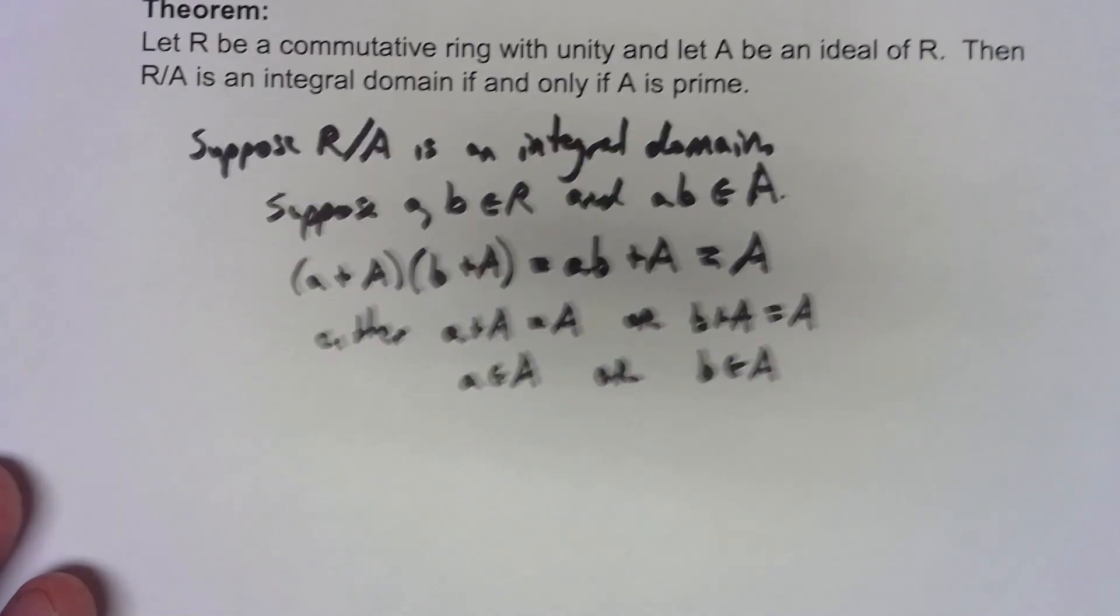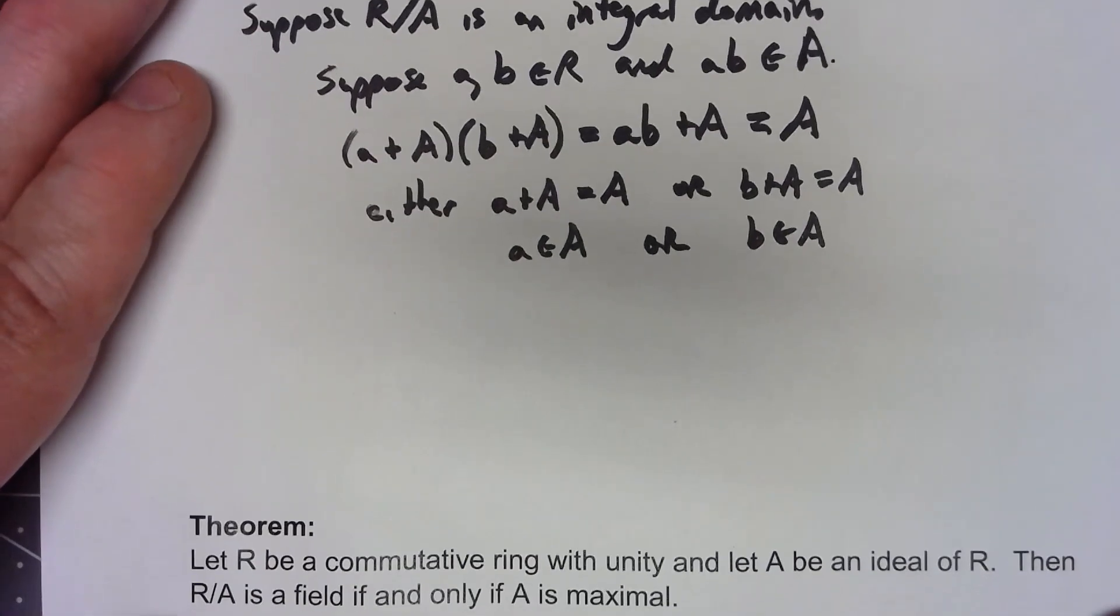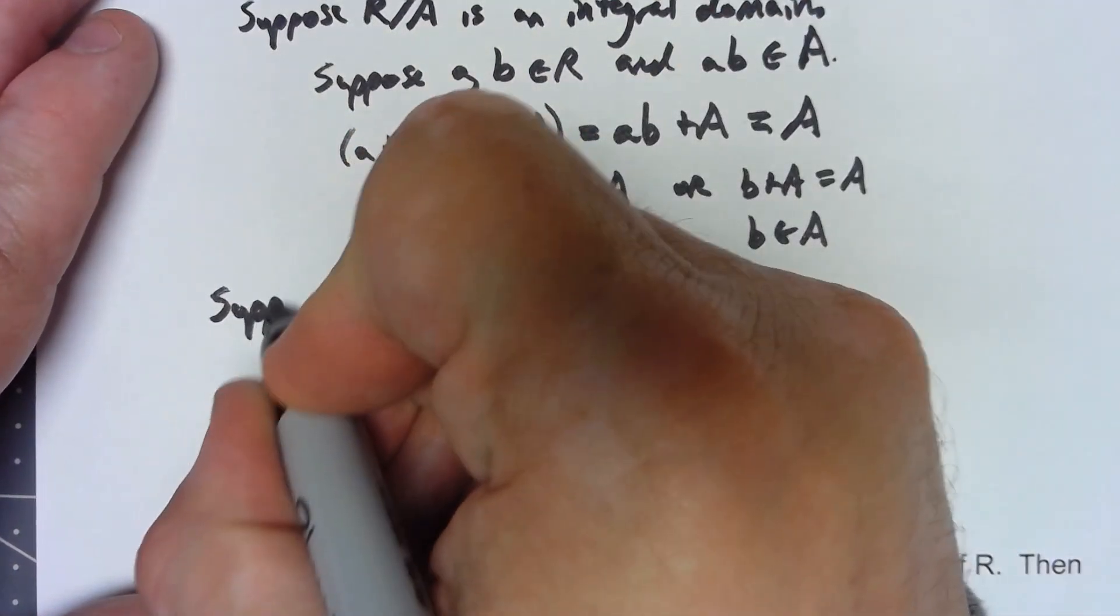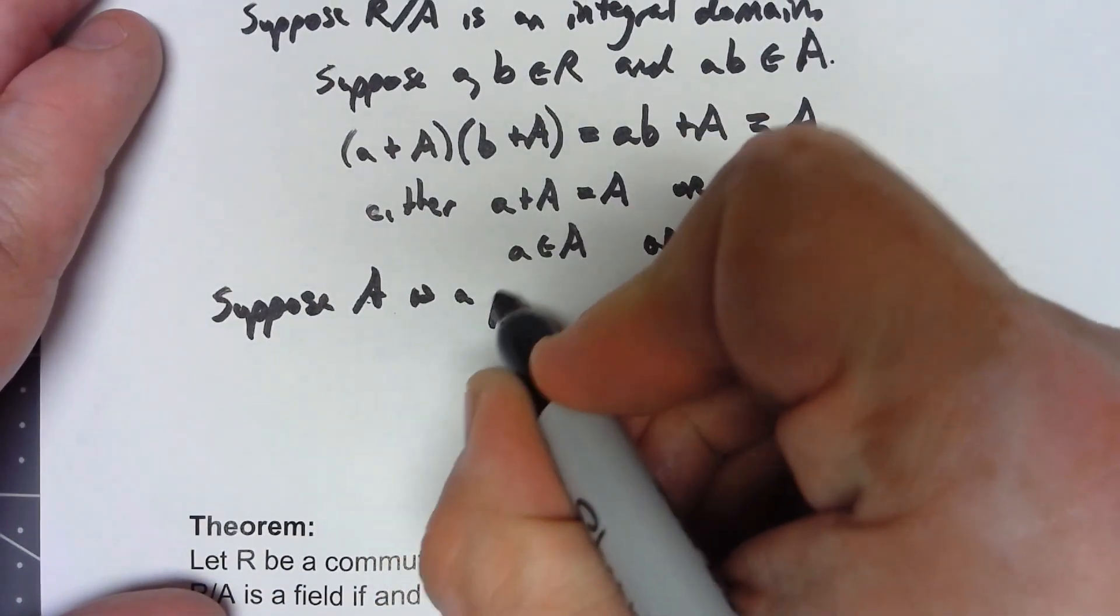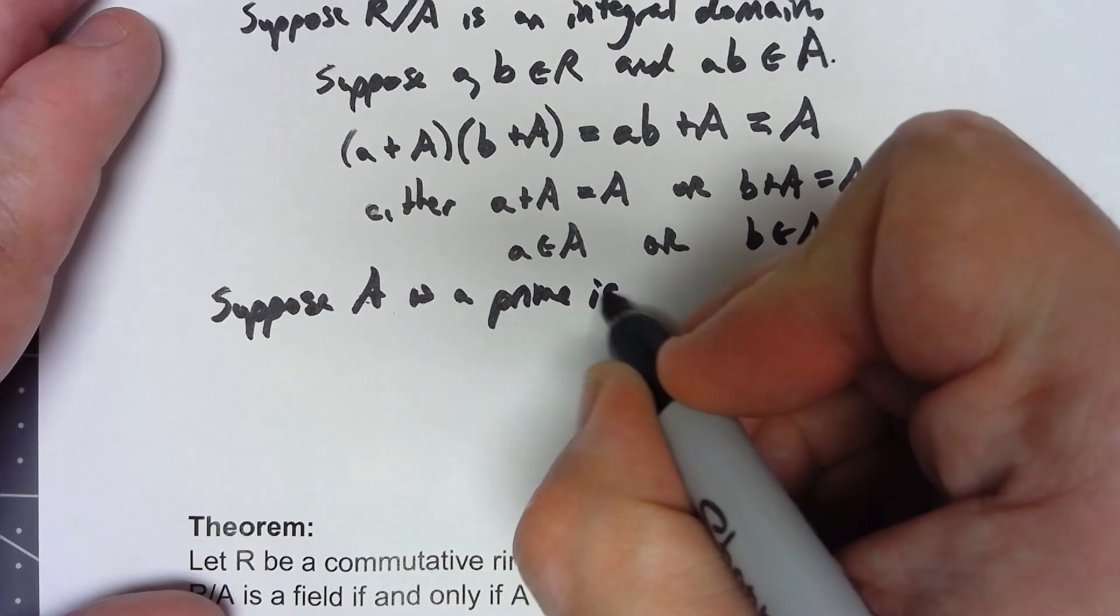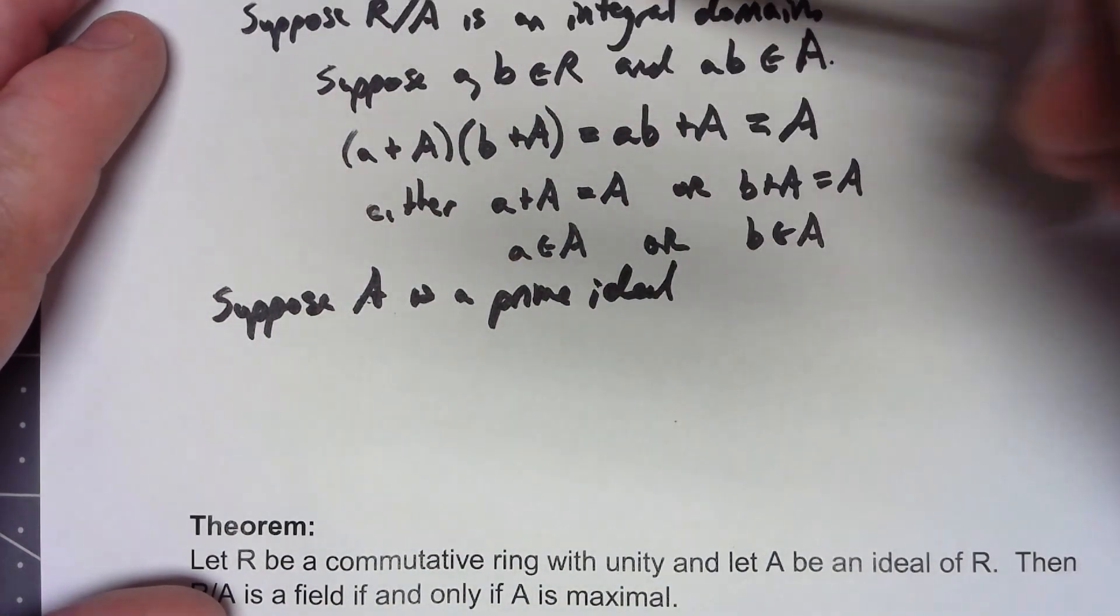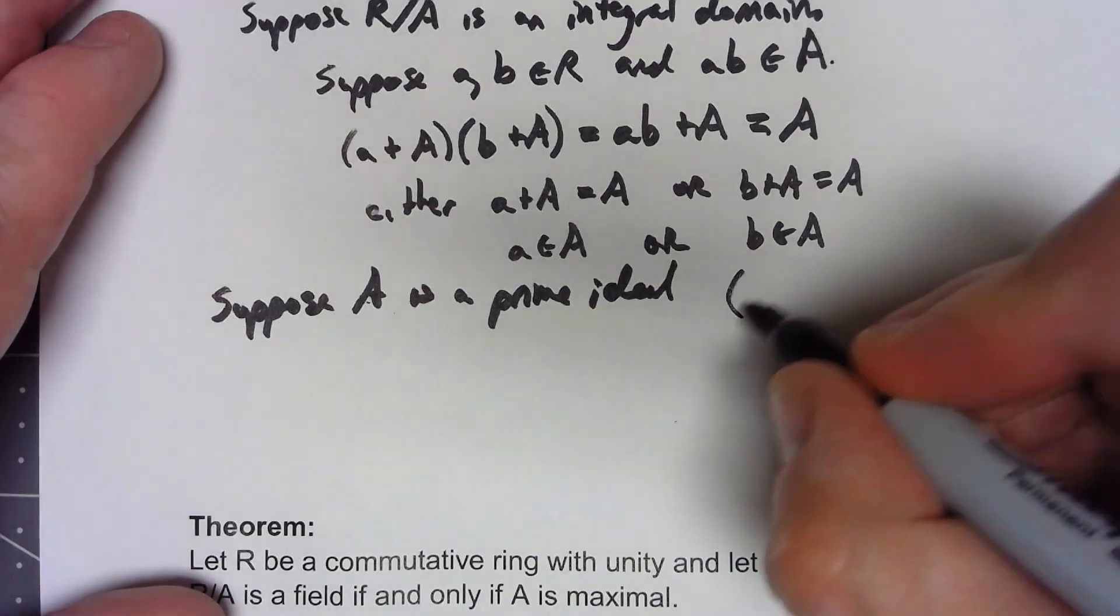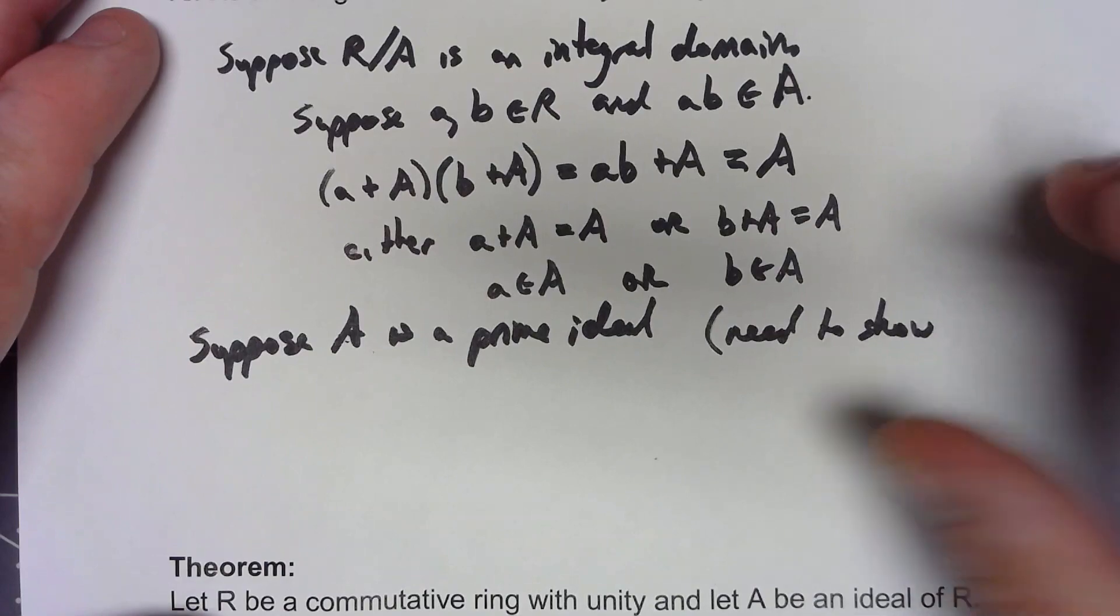Okay, so now what about the other direction? Let's suppose that A is a prime ideal. We need to show that R/A is an integral domain. So we need to show that R/A has no zero divisors.